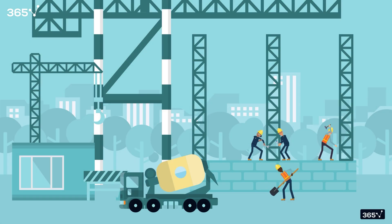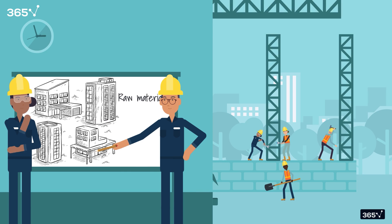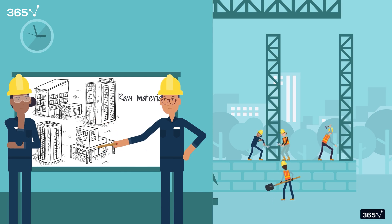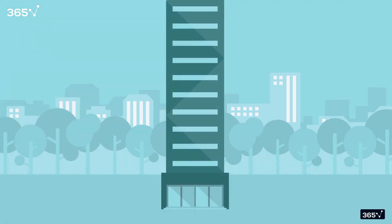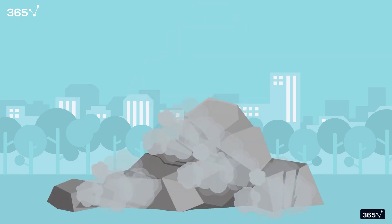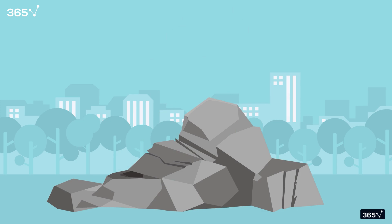When a building is being constructed, long before the first bricks are put down or any kind of groundwork begins, architects draw several blueprints with the building's design, including measurements of every inch of raw material that needs to go into construction. What do you think will happen if the construction crew started constructing an 80-story building without an architect's blueprints? Well, thankfully, we don't have to live in that world.